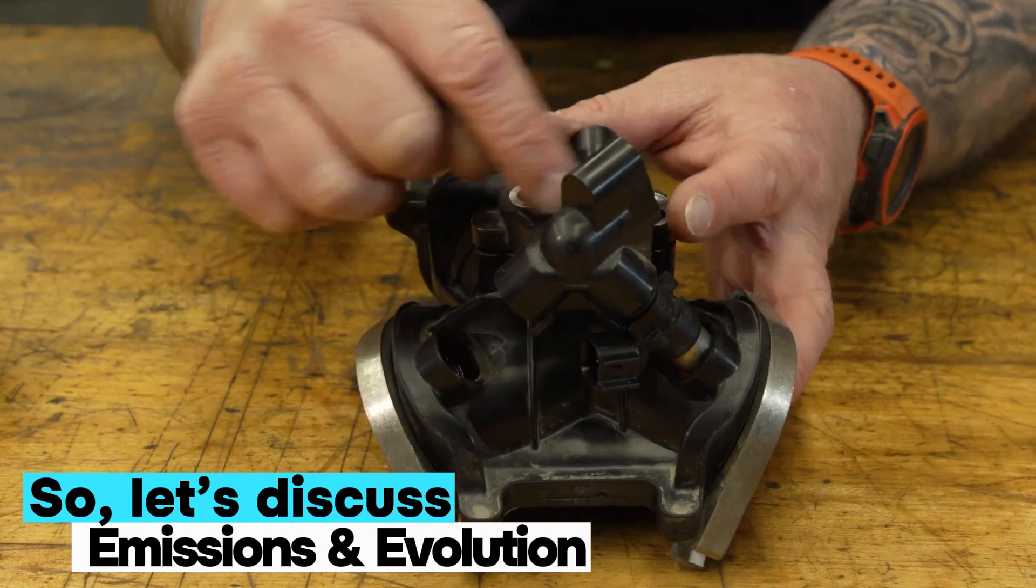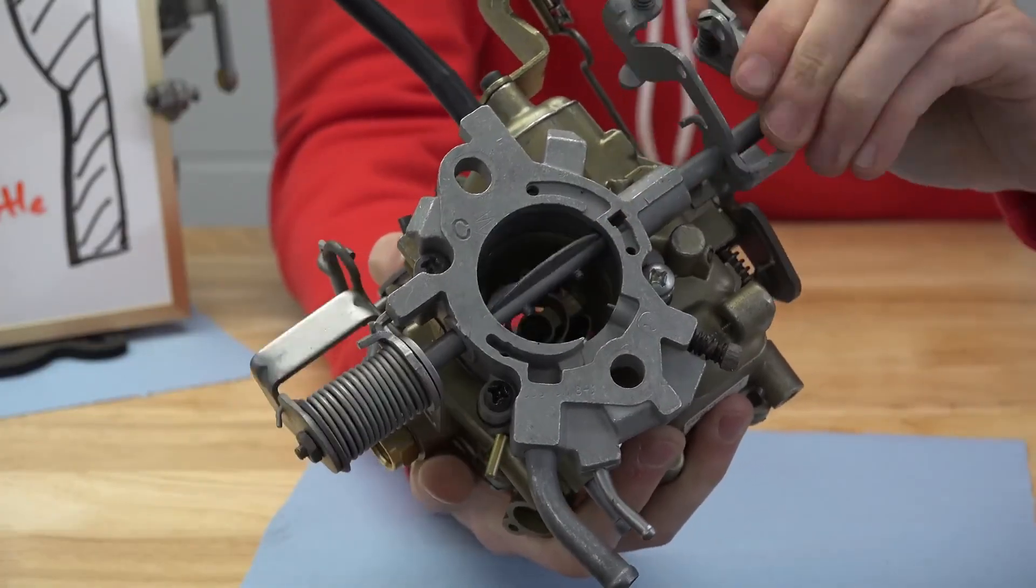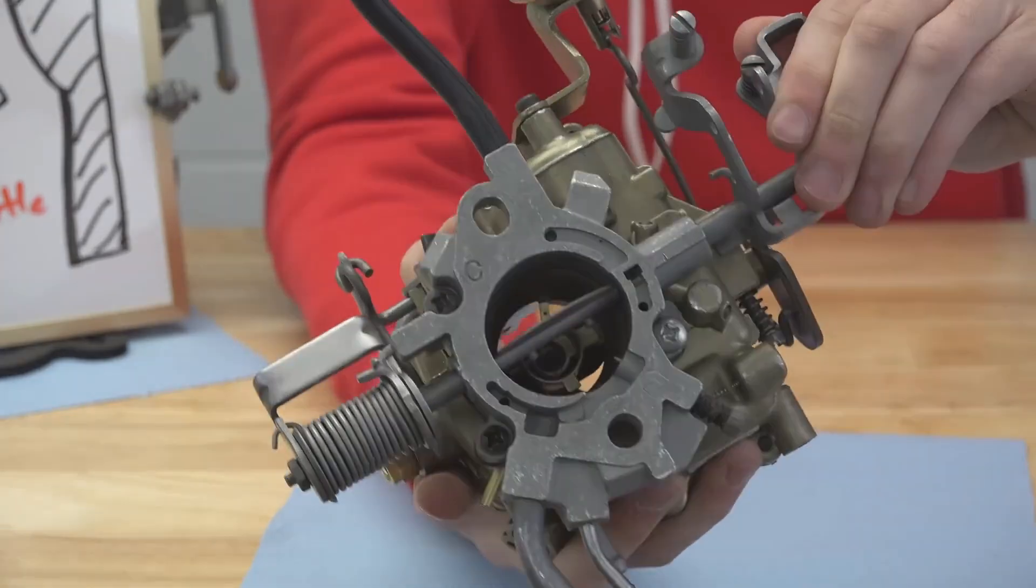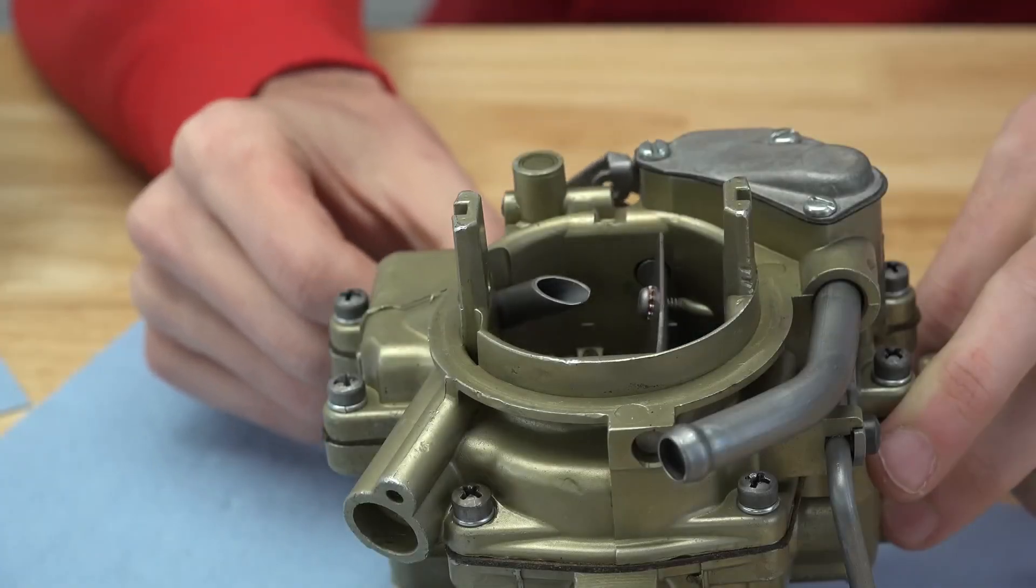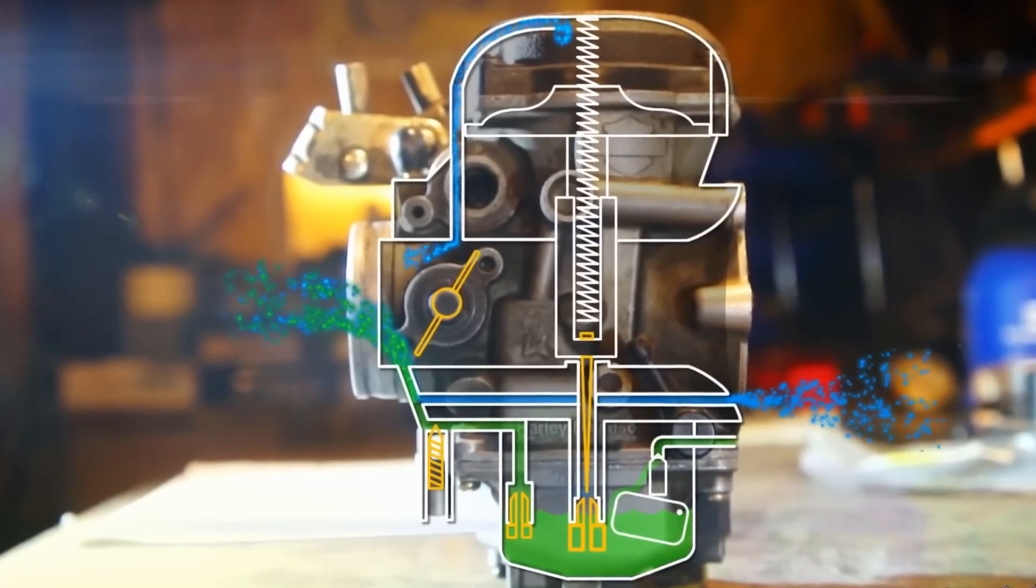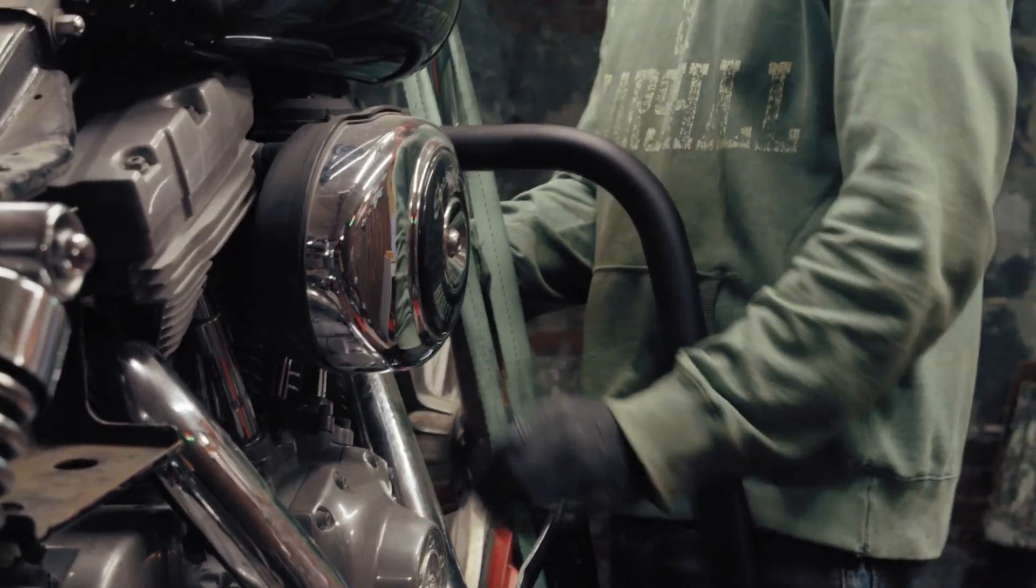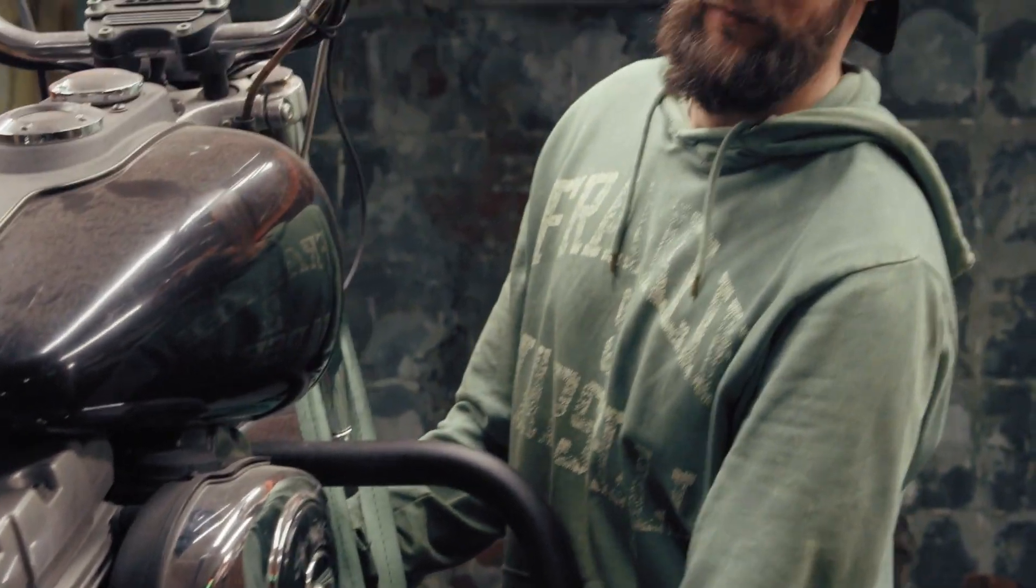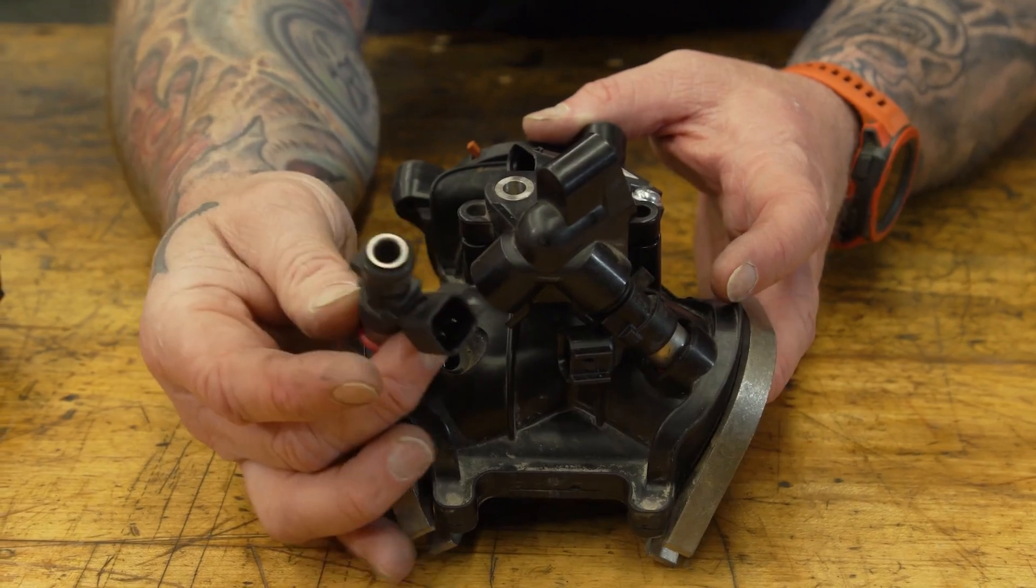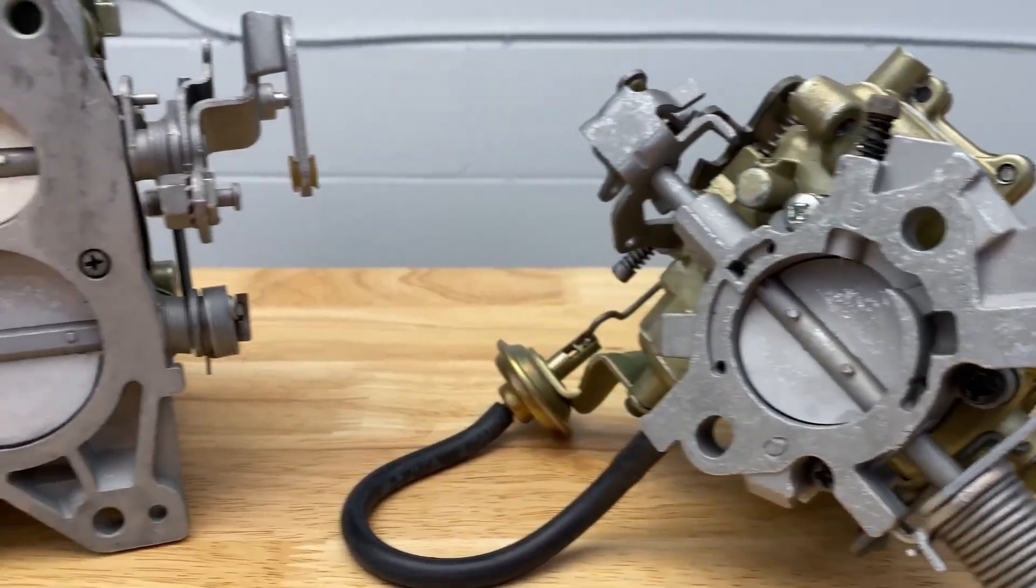So let's discuss emissions and evolution. It's not just performance that shaped the future of fuel systems, it's emissions. While carburetors had their time in the spotlight, they were never built with clean air in mind. They constantly vent fuel vapors, struggle with precise tuning, and can't adjust to real-time environmental changes. In today's world of strict regulations and eco-conscious design, that's a deal breaker.